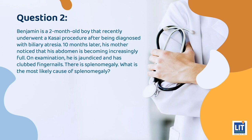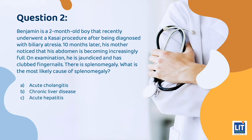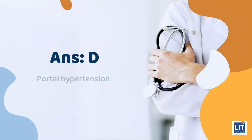Question 2: Benjamin is a 2-month-old boy that recently underwent a Kasai procedure after being diagnosed with biliary atresia. 10 months later, his mother noticed that his abdomen is becoming increasingly full. On examination, he is jaundiced and has clubbed fingernails. There is splenomegaly. What is the most likely cause of the splenomegaly? A. Acute cholangitis. B. Chronic liver disease. C. Acute hepatitis. D. Portal hypertension. Or E. Hyperbilirubinemia. The answer is D: portal hypertension.